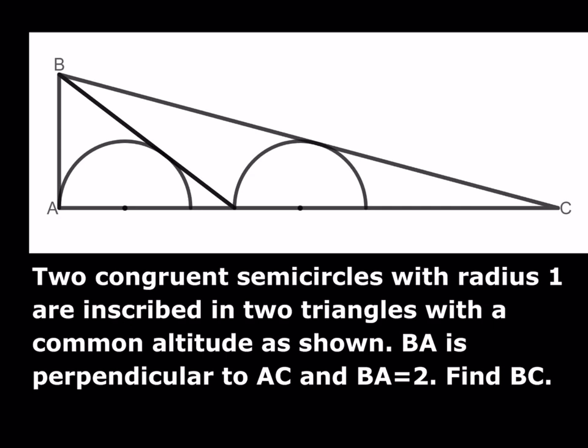Let's get started. We have two congruent semicircles with radius 1. They're inscribed in two triangles with a common altitude as shown. We have a right triangle BAC, and BA is equal to 2, and we're supposed to find BC.